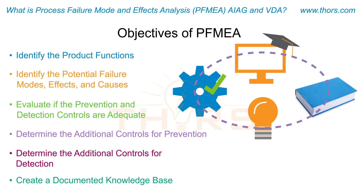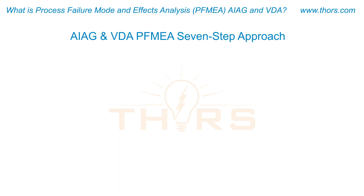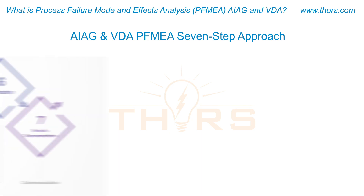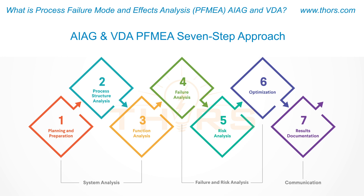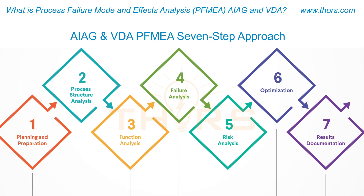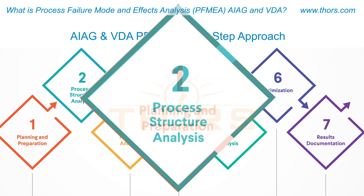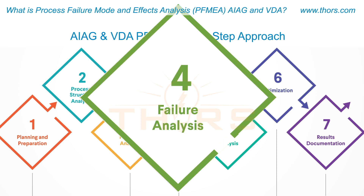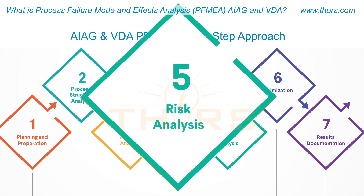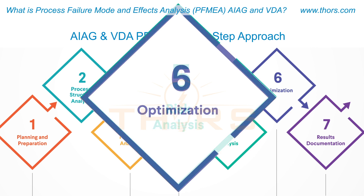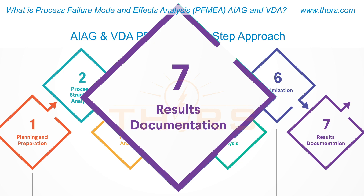The AIAG and VDA PFMEA divides the PFMEA development process into a seven-step approach. The seven steps are: planning and preparation, process structure analysis, function analysis, failure analysis, risk analysis, optimization, and results documentation.